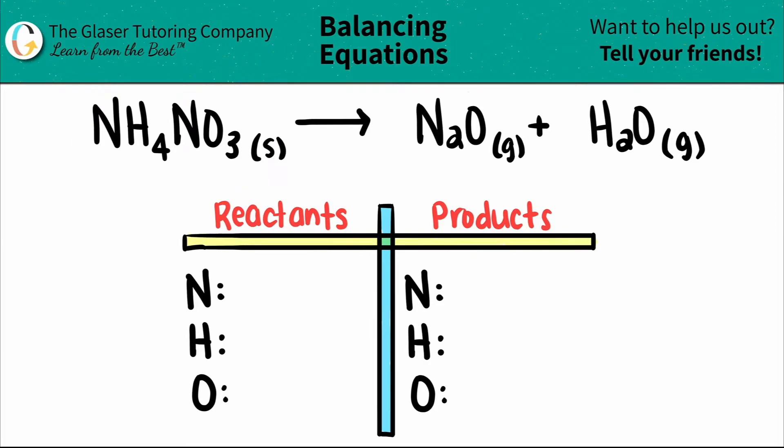So let's start with the left side. I see that I have a nitrogen here and I have a nitrogen here. I have one nitrogen and I have one nitrogen. So one plus one is two. So I have two total nitrogens. For the hydrogen, I see that I have a four here. So I have four hydrogens. And then for the oxygen, there's a three next door. So I have three oxygens.